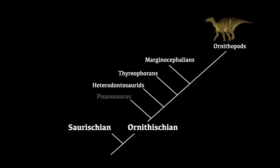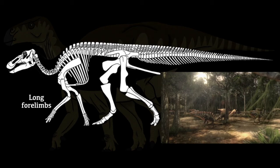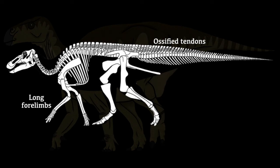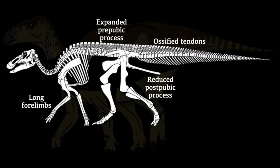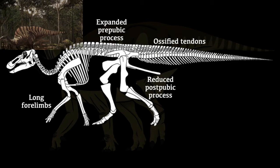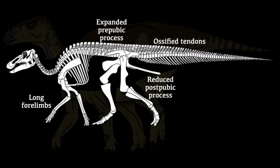The last group of ornithischians are the Ornithopods, which include the group commonly called the duck-billed dinosaurs. They had long forelimbs often used as both arms and legs, and ossified tendons along the back and tail making them very stiff. The hip also changed: the post-pubic process was reduced while the pre-pubic process expanded. These dinosaurs spread all over the world as one of the most successful dinosaur groups. They include Iguanodon, Edmontosaurus, and Parasaurolophus.